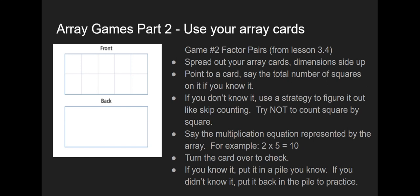Another game that we learned was a game called Factor Pairs. You would again use your array cards and you would spread them out with dimensions listed side up. You would point to the card and say the total number of squares on it if you know it. If you don't know it, you would use a strategy to figure it out, maybe skip counting. Try not to count the squares one by one. Say the multiplication equation represented by the array. For example, this card represents 2 times 5. Two groups of 5 equals 10. Turn the array card over to check. If you knew the fact, put it in a pile of facts you know. If you didn't know the fact, put it back in the pile to practice again.